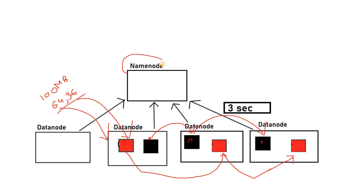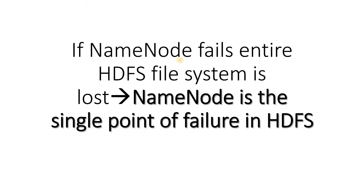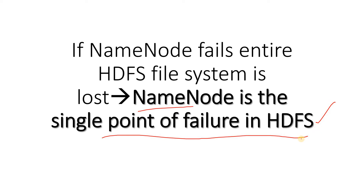The NameNode is the master node and a single instance present in our HDFS cluster which controls the metadata — information about which block is stored in which data node. The problem is if the NameNode fails, the entire HDFS file system is lost. That means the NameNode is the single point of failure for HDFS. Just like removing the table of contents from a book makes finding content very difficult, if the NameNode fails the whole HDFS file system will no longer be accessible.